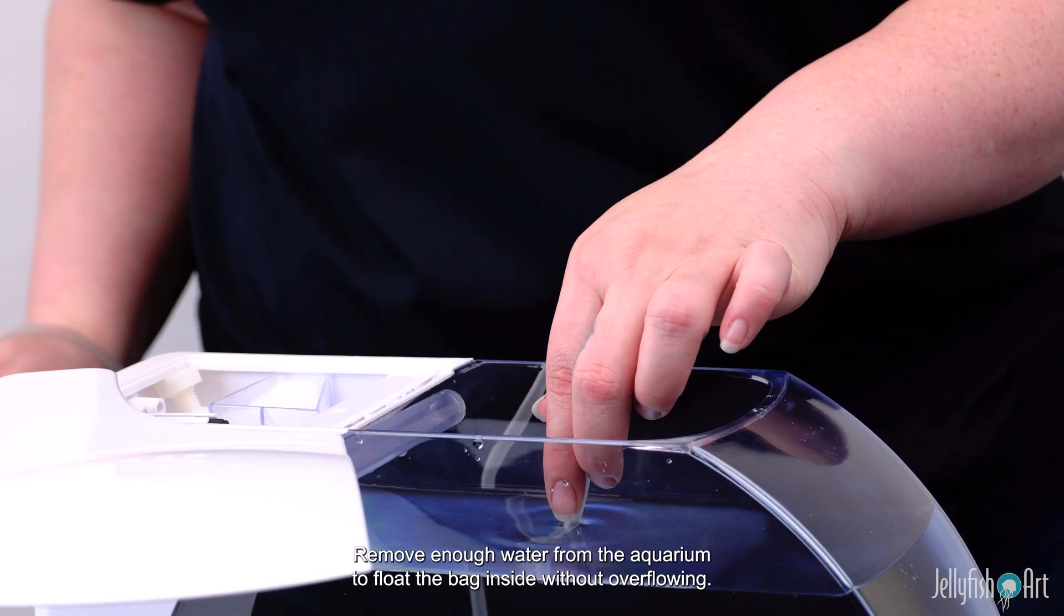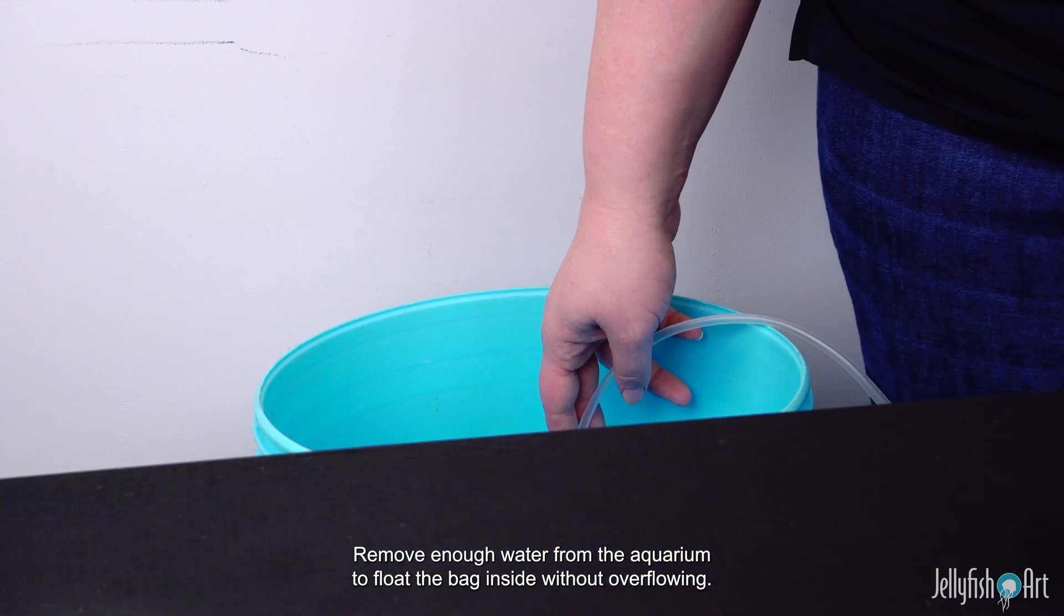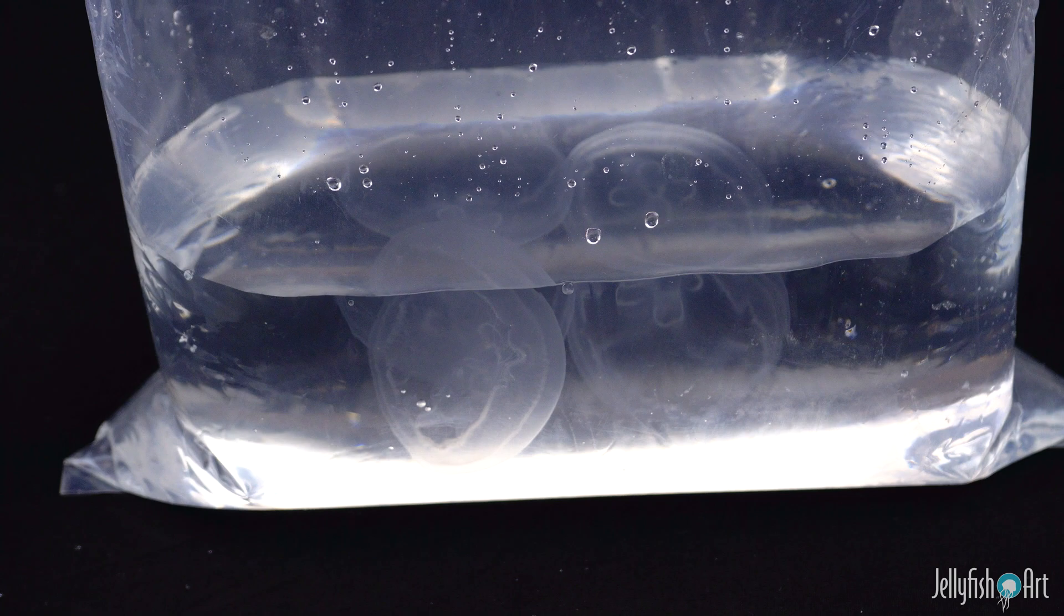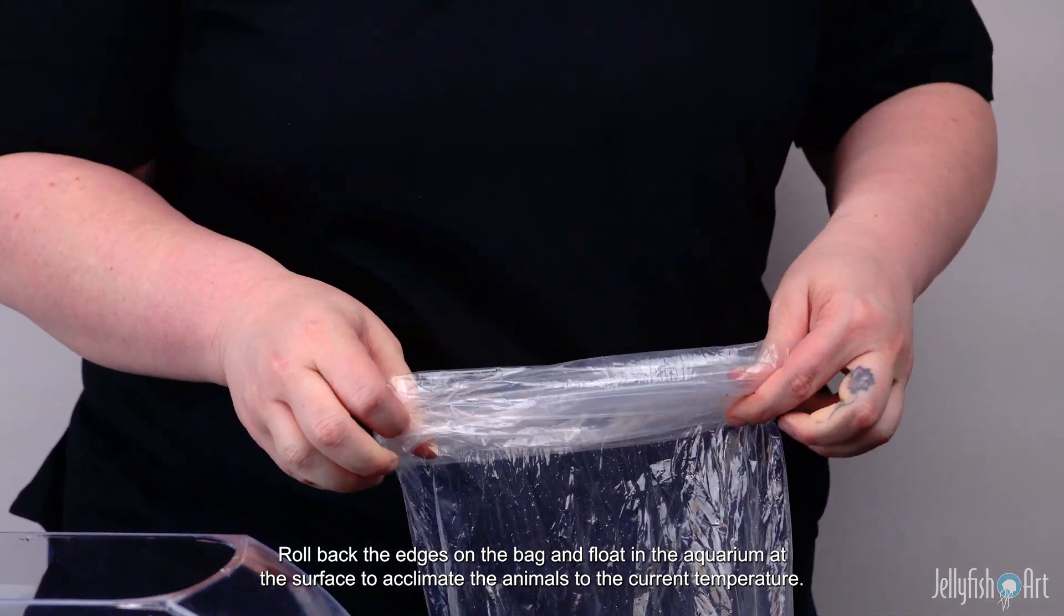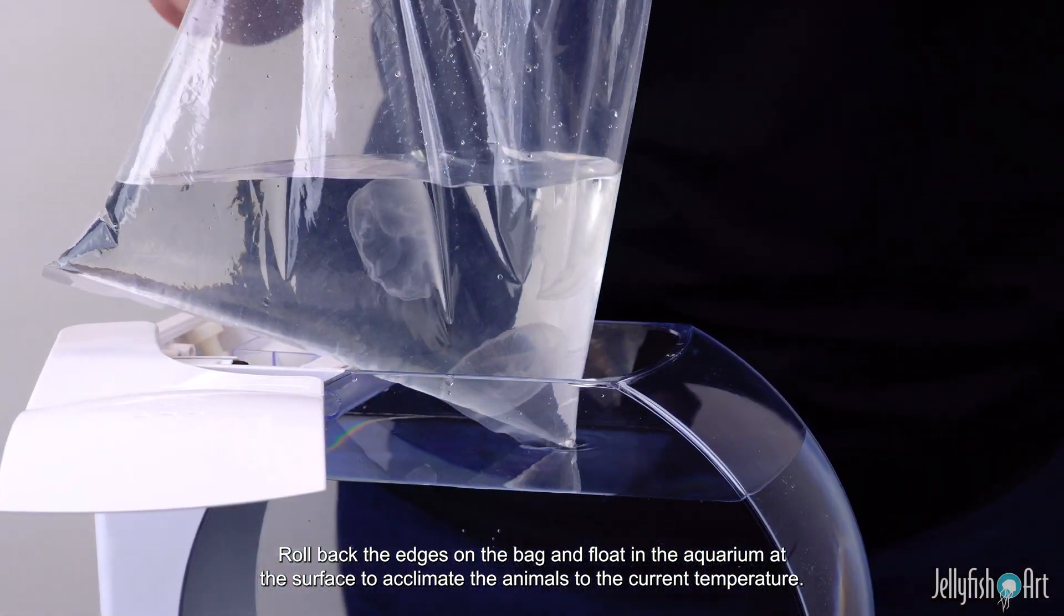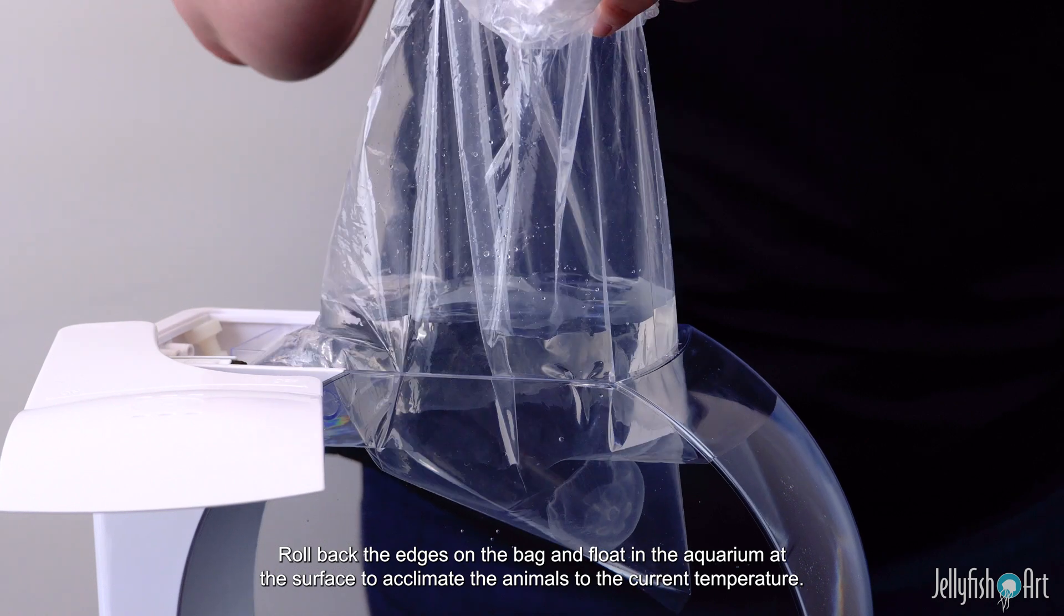Remove enough water from the aquarium to float the bag inside without overflowing. Roll back the edges on the bag and float in the aquarium at the surface to acclimate the animals to the current temperature.